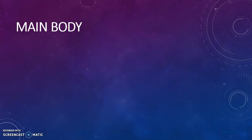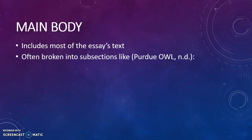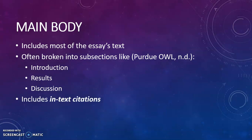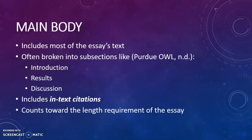All right, the main body. This is really where your essay is — it includes most of the text of your essay and is typically broken down into subsections. I'll have a video that discusses exactly how to do these different subsections, but here are a couple of example titles of different subsections. This is also where you're going to find in-text citations in parentheses at the end of sentences. This area of the paper does count toward the length requirement of an essay, so if you have a five-page requirement and you go on to the sixth page double-spaced, your essay is going to hit that requirement.